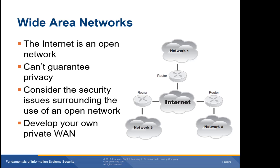From a security perspective, it's important to remember that the internet is an open network. You cannot guarantee data privacy once data leaves your network — the data might travel any path to get to their destination and anyone might be able to read those data along the way. Think of data on the internet as more like a postcard than a letter in a sealed envelope. Fortunately, encryption enables you to hide the meaning of your data.